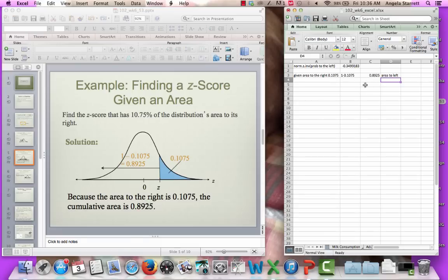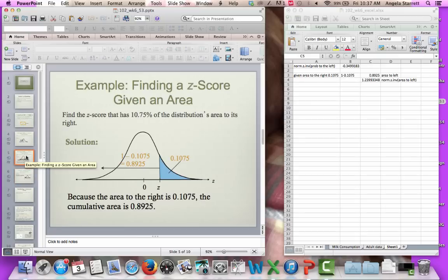I can get my z-score. So norm.s.inv of area to the left. And so now I can type my function in. I'm going to do equals norm.s.inv. I'm going to use my probability that I just calculated, and you can see that I get a z-score of 1.24. So this z-score right here that has 0.1075 area above it that also has 0.8925 area below it, this z-score is 1.24.